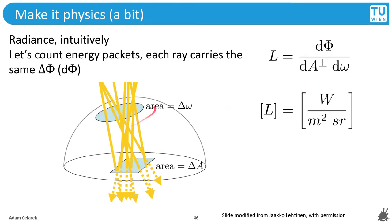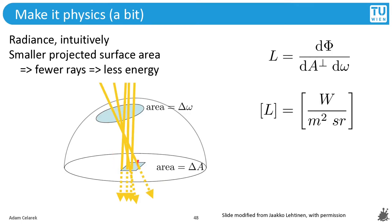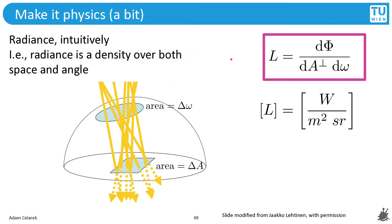When we make the solid angle smaller, we have fewer rays, so this means less energy. In the same way, when we make the area smaller, we again have fewer rays, and this again means less energy. So this means that radiance is a density of both space and angle.